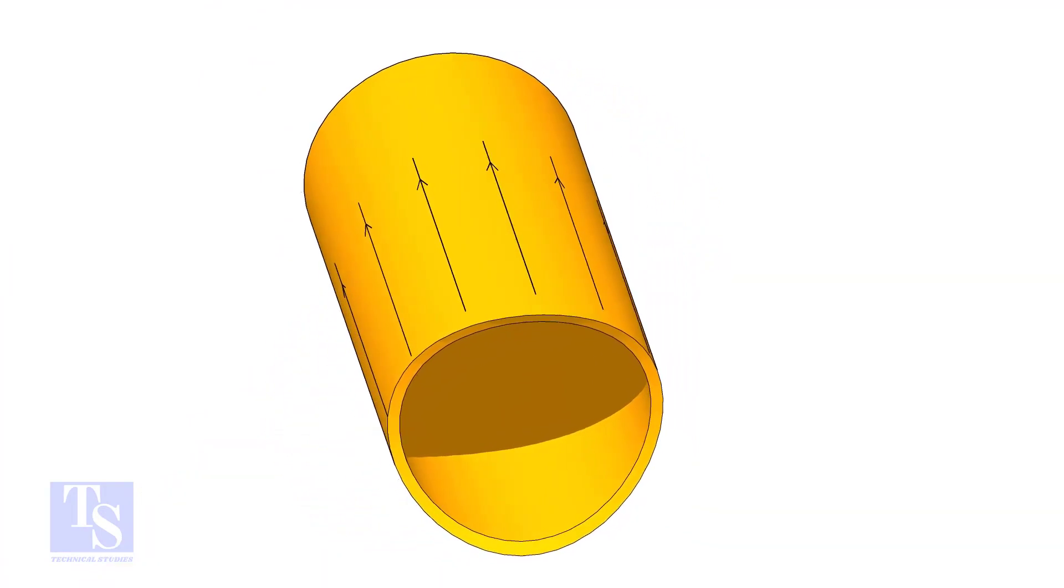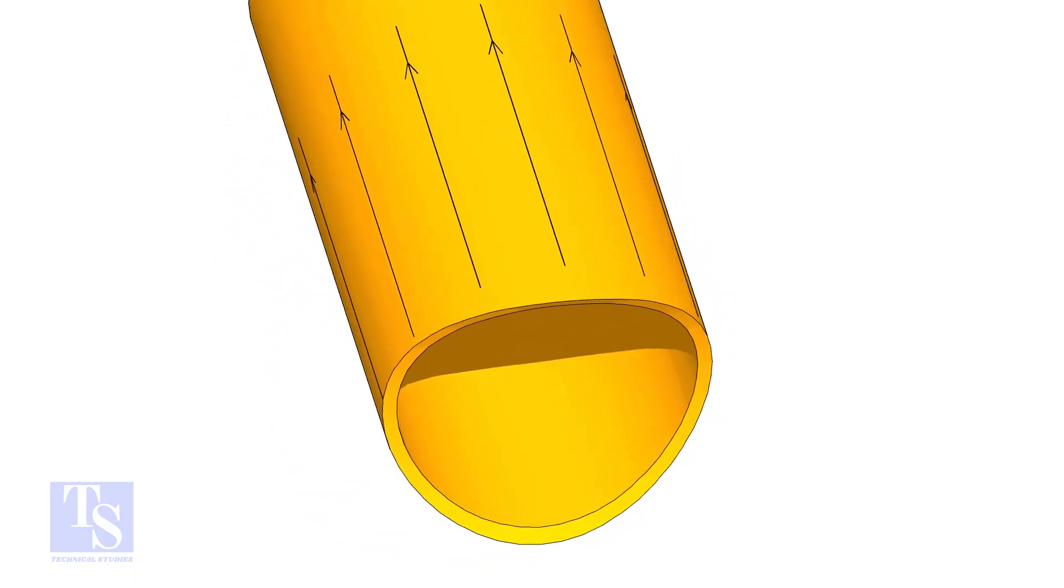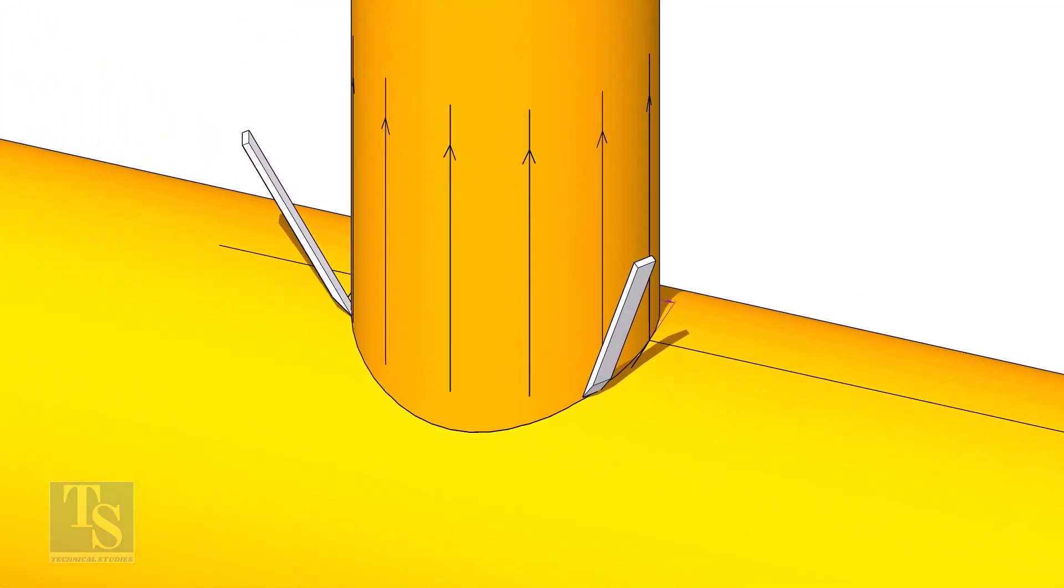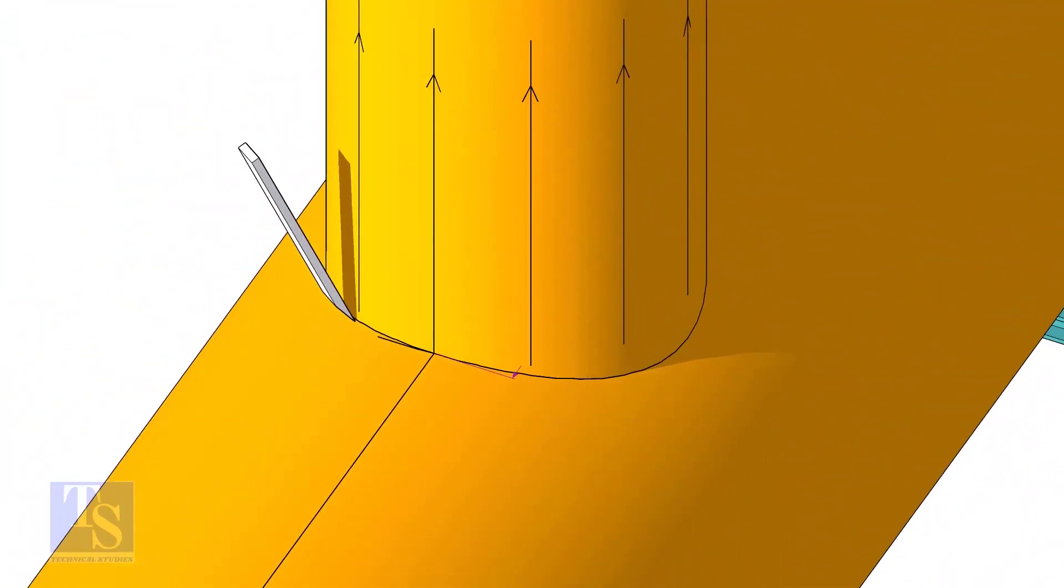After cutting and grinding the notch on the branch pipe, put it on the header. Make sure it is exactly in its position and mark the opening on the header as shown.